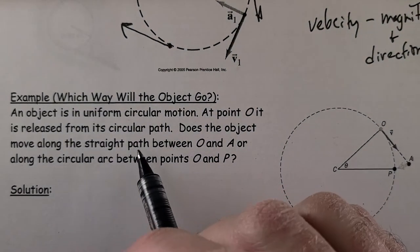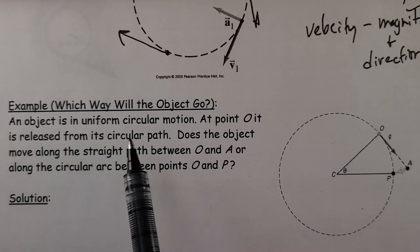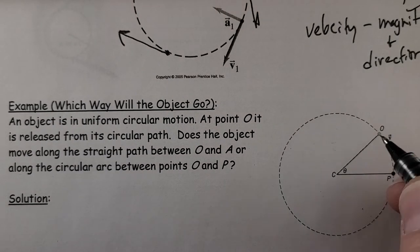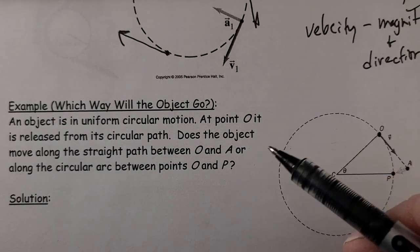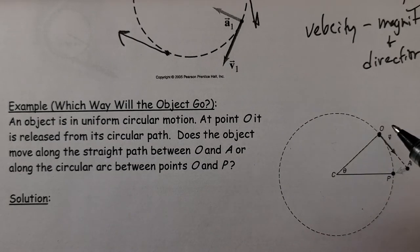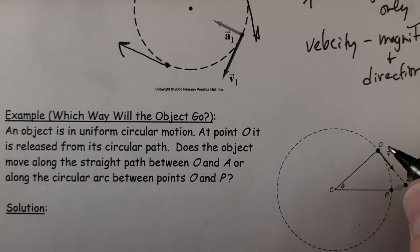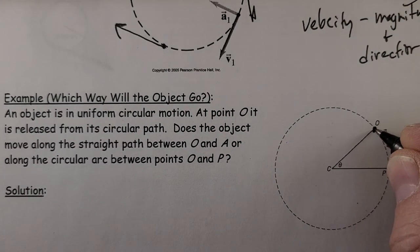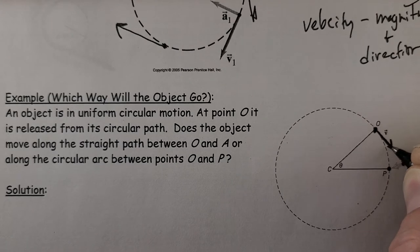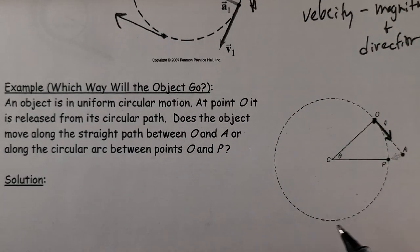So that leads us to this question. An object is in uniform circular motion. At point O it is released from its circular path. So we can think of the string as being snapped. Does the object move along a straight path between O and A or along the circular arc between O and P? And of course, from discussing it here, it's tangent at that particular move. It moves off tangent. Hitting that one place, just like how we drew a tangent line there.